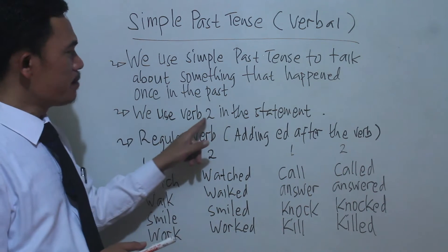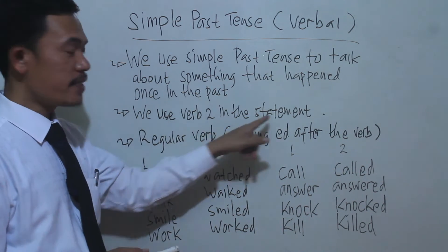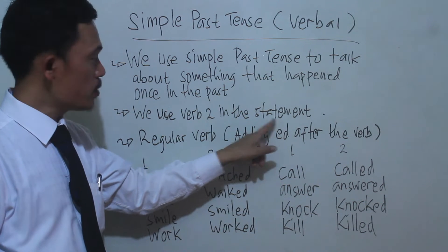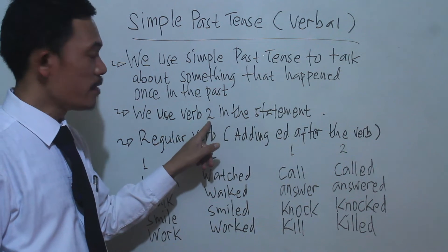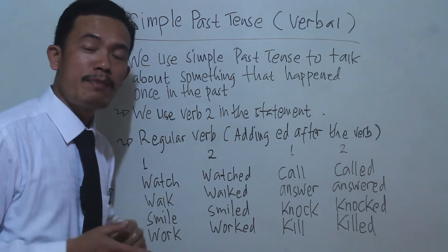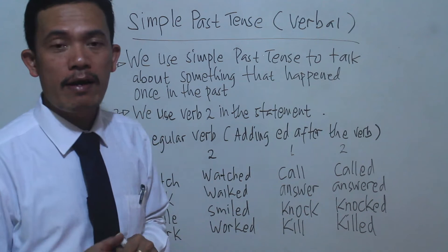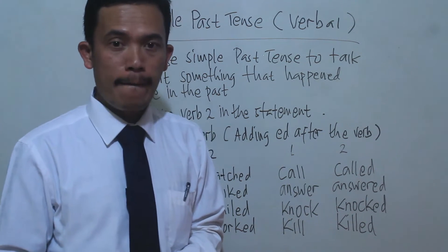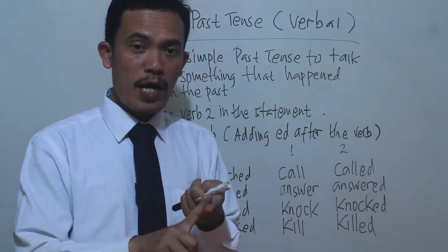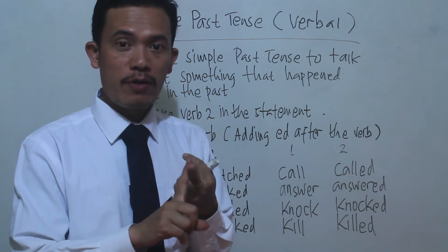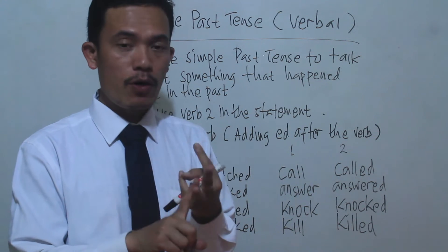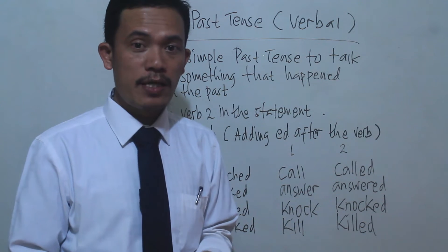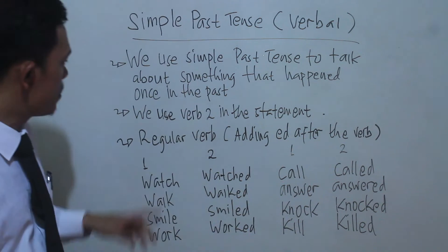In a statement using simple past tense, we have to use verb 2. Remember that there are some kinds of verbs in English. We call them verb 1, verb 2, and verb 3. We will discuss deeper about these topics later on.